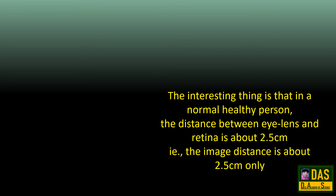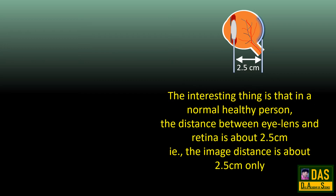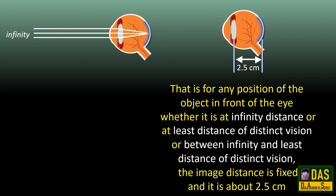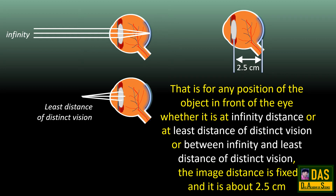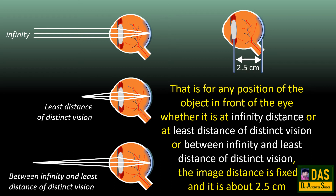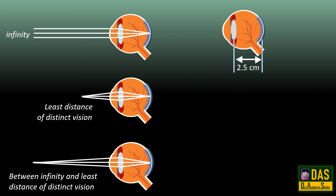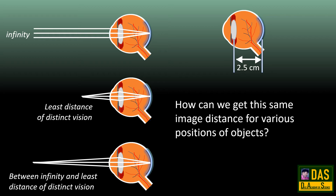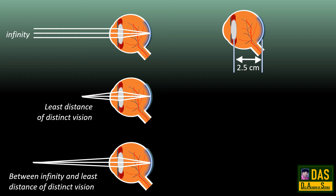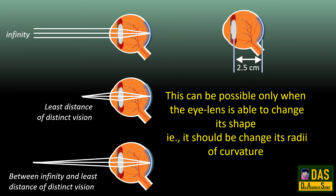In a normal healthy person, the distance between the eye lens and retina is about 2.5 cm — that is, the image distance is about 2.5 cm. For any position of the object in front of the eye, whether at infinity, at the least distance of distinct vision, or anywhere in between, the image distance is fixed at about 2.5 cm. This is possible only when the eye lens can change its focal length, which in turn requires the eye lens to change its shape — that is, its radii of curvature.